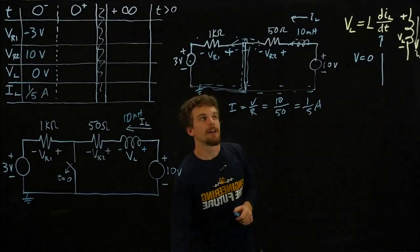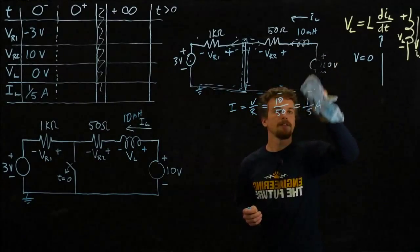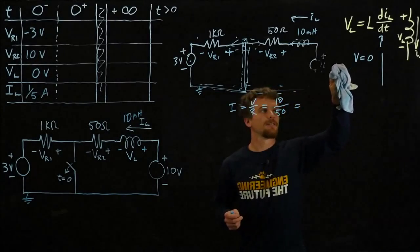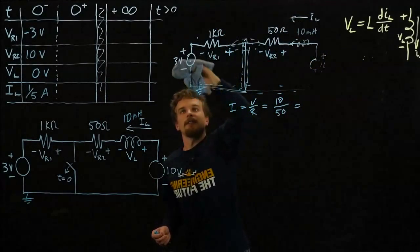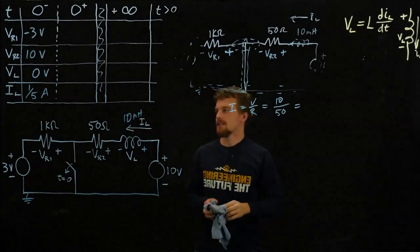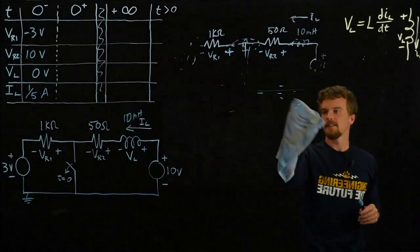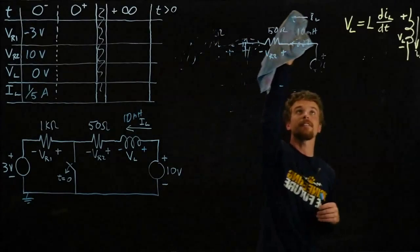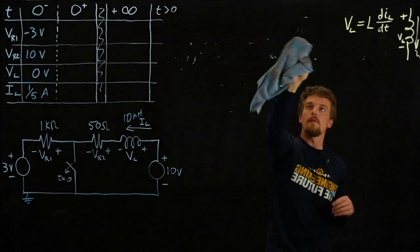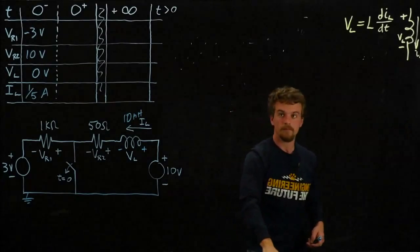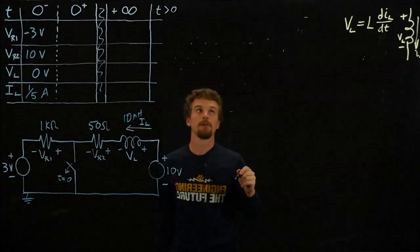Now we have our first column filled in. Let's erase this and draw the circuit right after the switch opens, because it pretty much becomes a different circuit. But as we'll see, some things stay the same. We know the current through an inductor can't change instantaneously, so we'll use that fact and other things about the circuit to find all the values right after the switch closes.